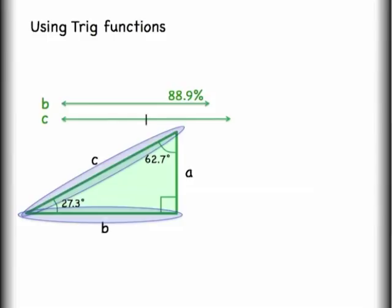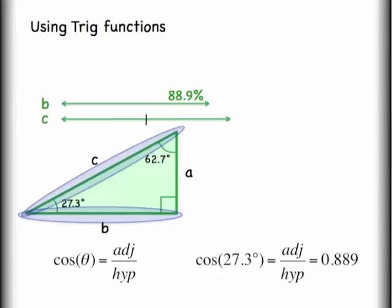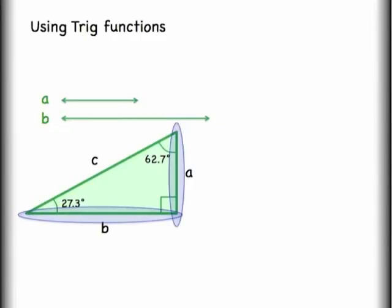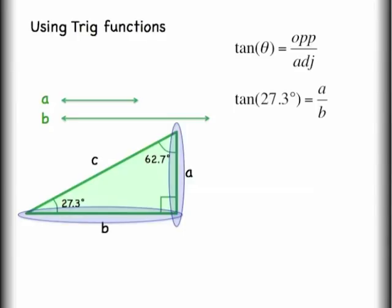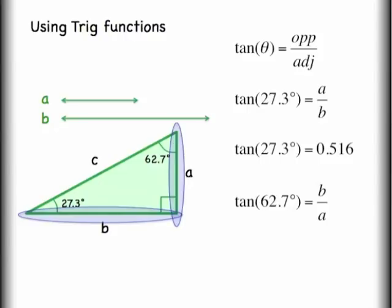We can find that same information using the cosine function — adjacent over hypotenuse — using the 27.3-degree angle, and still get 0.889. If we want to compare the two sides not related to the hypotenuse, we use the tangent function. Tangent of 27.3 degrees gives the ratio of A divided by B, about 0.5. Looking from the other side, tangent gives B over A, which is closer to 2.